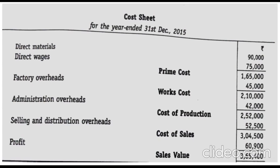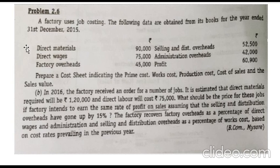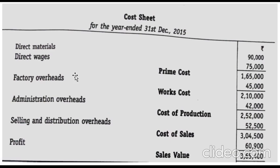Next, after factory overhead we find administration overhead, which is 42,000. Adding administration overhead to works cost gives the cost of production: 2,10,000 plus 42,000 equals 2,52,000.